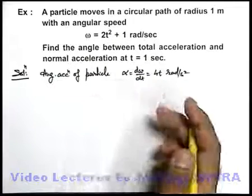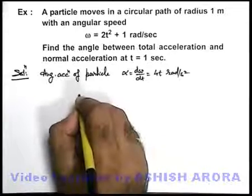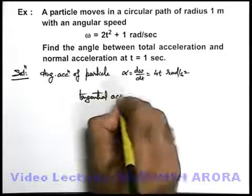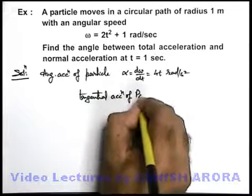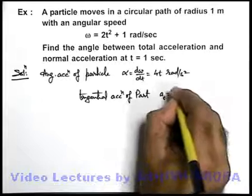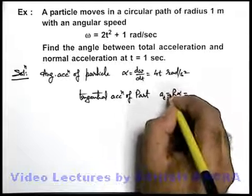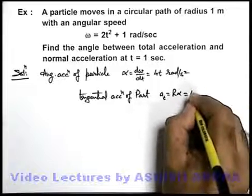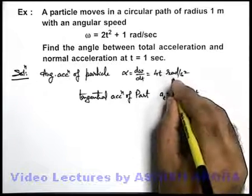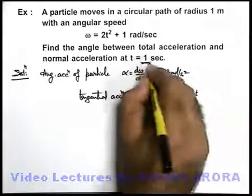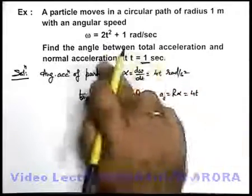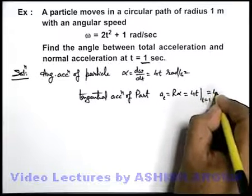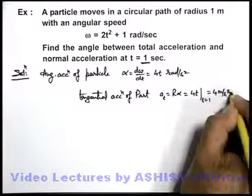Having the angular acceleration, we can directly get the tangential acceleration. The tangential acceleration of the particle can be written as r times alpha. Here r equals 1 meter, so tangential acceleration equals 4t meter per second squared. Since we need the value at t equals 1 second, tangential acceleration equals 4 meter per second squared.